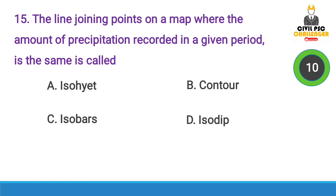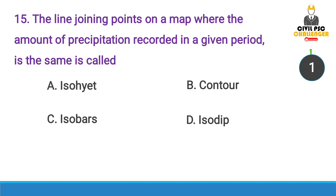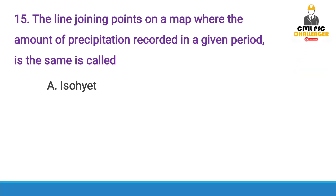Next question: The line joining points on a map where the amount of precipitation recorded in a given period is the same is called — Answer option A, Isohyet.